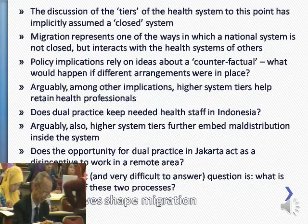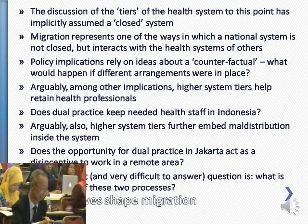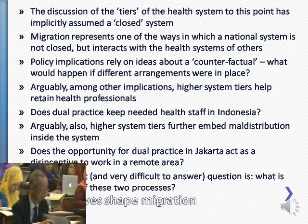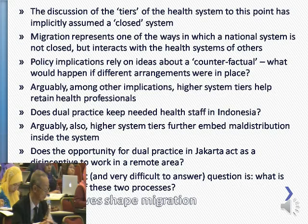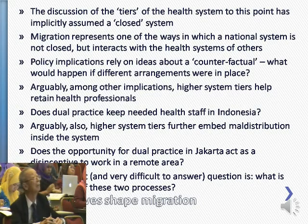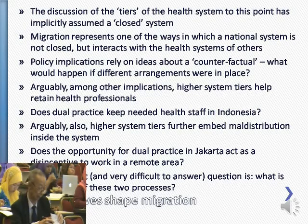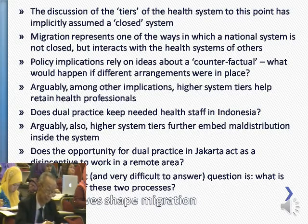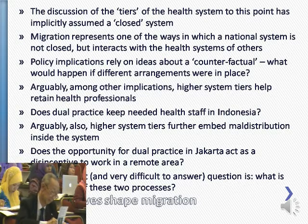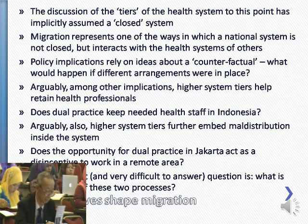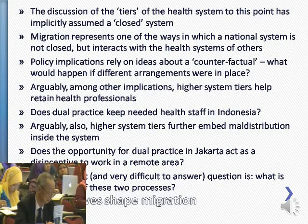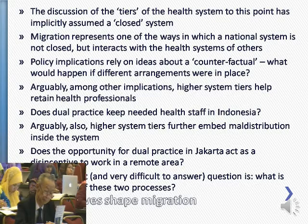The discussion of health system tiers has implicitly assumed a closed system — we generally think about health systems at the national level as if they were not influenced by things going on outside. But moving on to migration, we have to recognize that the system is actually open: what's going on in other people's health systems affects our own. We also have to worry about the counterfactual — what would happen if different arrangements were in place — which is very difficult to answer even if we can observe different arrangements elsewhere.